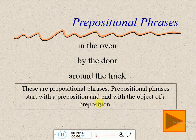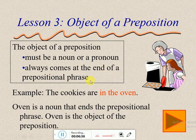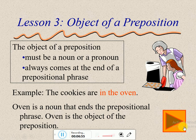A prepositional phrase ends with the object of the preposition — وبتنتهي بالاسم، بسموه object — اللي هو الاسم المجرور. The object of a preposition must be a noun or a pronoun — لازم يكون اسم أو ضمير — and it always comes at the end of the prepositional phrase. For example: 'The cookies are in the oven.' 'In the oven' is the prepositional phrase; 'in' is the preposition; 'the oven' is the object of the preposition — الاسم المجرور.